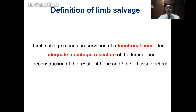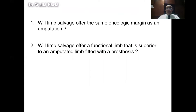Limb salvage means the preservation of a functional limb after adequate oncologic resection of the tumor and reconstruction of the resultant bone and soft tissue defect. We ask two questions: Will limb salvage offer the same oncologic margin as an amputation? And will limb salvage offer a functional limb superior to an amputation fitted with a prosthesis? If both answers are yes, we proceed with limb salvage.